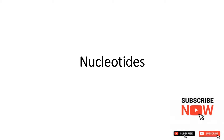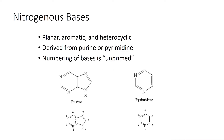Hello, my dear viewers and students, welcome to my channel. Today I will explain nucleotides. What are nitrogenous bases? These are planar, aromatic, and heterocyclic compounds. They are basically derived from purine and pyrimidine.